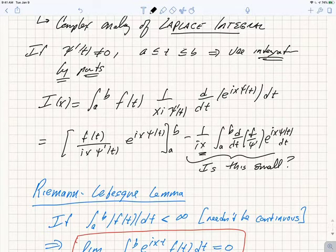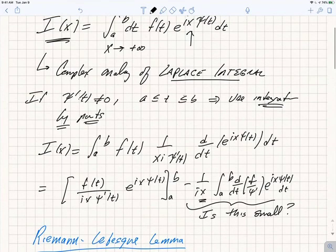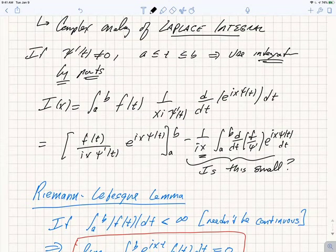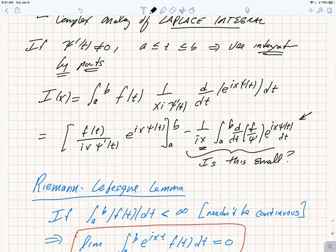minus something that's got an extra 1 over x in front of it, relative to the kind of integral that we started with. So it seems like integration by parts is going to work if we can somehow show that this integral over here is small and that the controlling 1 over x is sufficient to make the remainder smaller than the terms that we've kept.